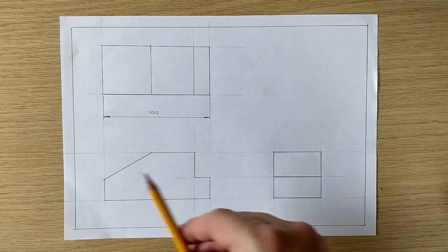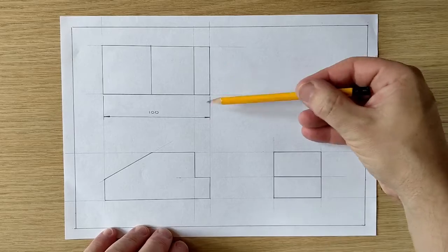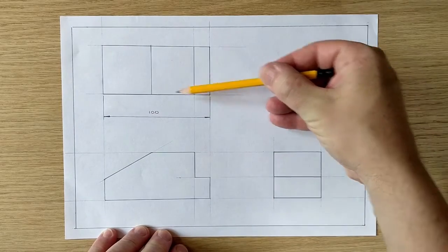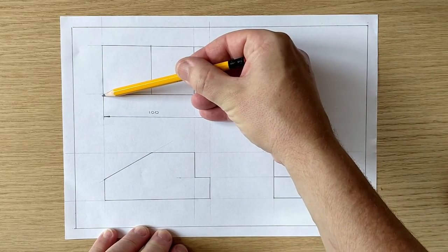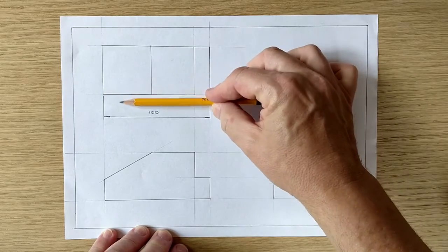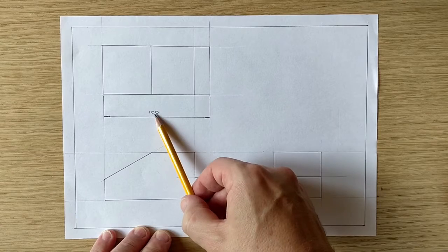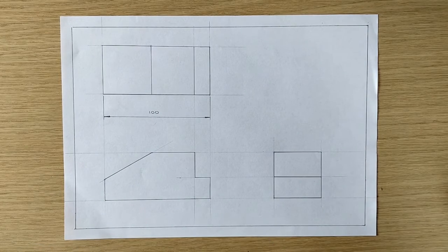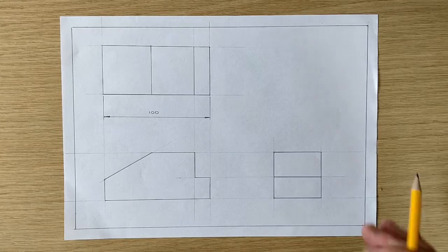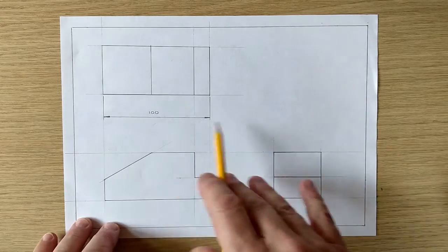So that is a dimension on our drawing telling us how long it is from that point to that point. The extension lines don't touch the drawing. It's spaced away, neatly drawn with slim neat arrows, and the number, the actual measurement itself, is above the line in the center. That's a horizontal dimension.